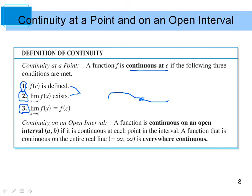A function is continuous on an open interval from a to b if it is continuous at each point in that interval. A function that is continuous on the entire real line — from negative infinity to positive infinity — is called everywhere continuous.